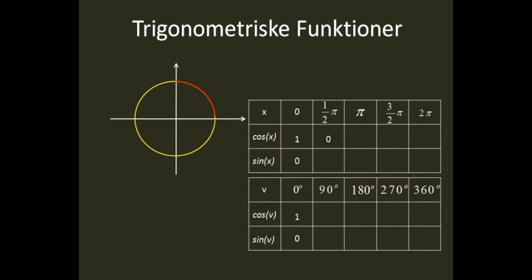Kosinus til en halv pi er lige med 0, og sinus til en halv pi er lige med 1. 3 fjerdedele af cirkelbueen har altså en vinkel på 270 grader.